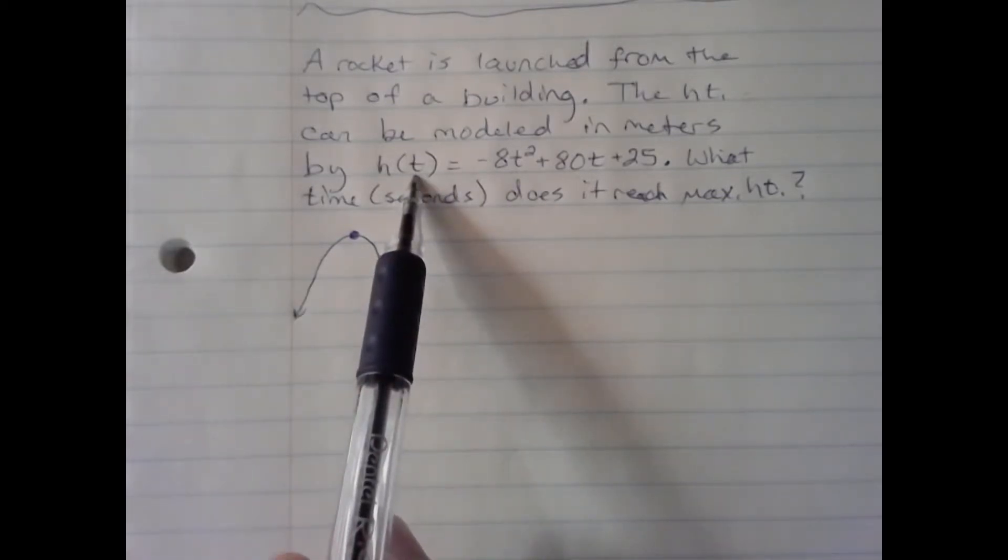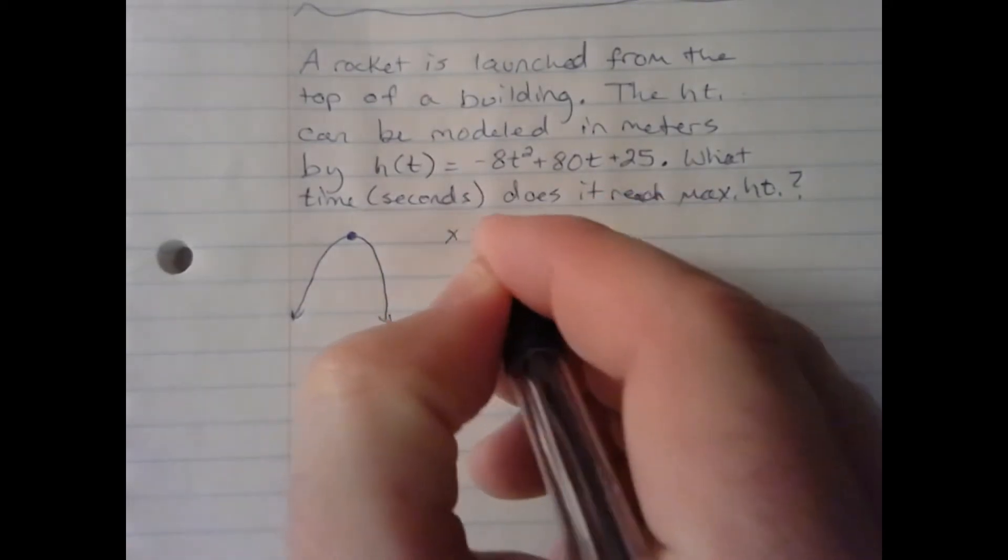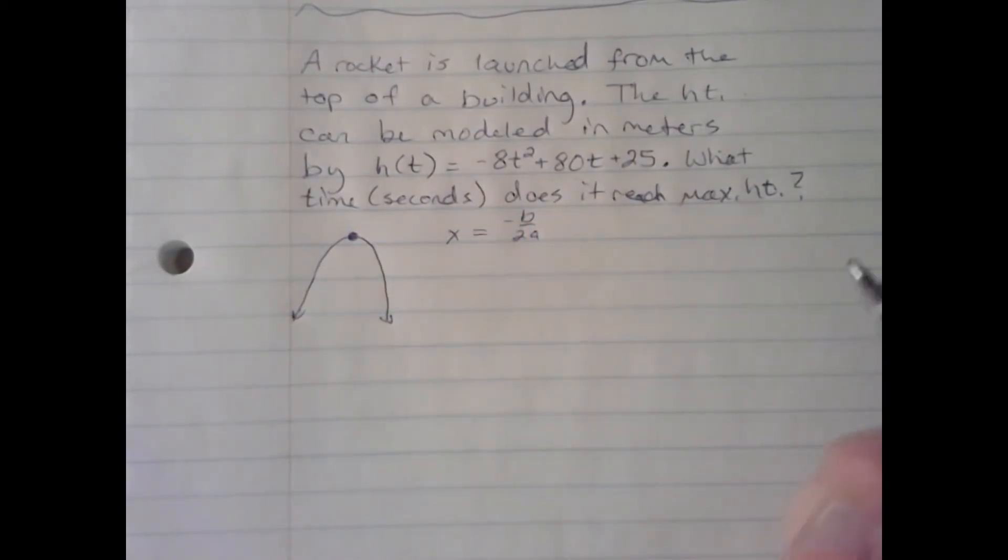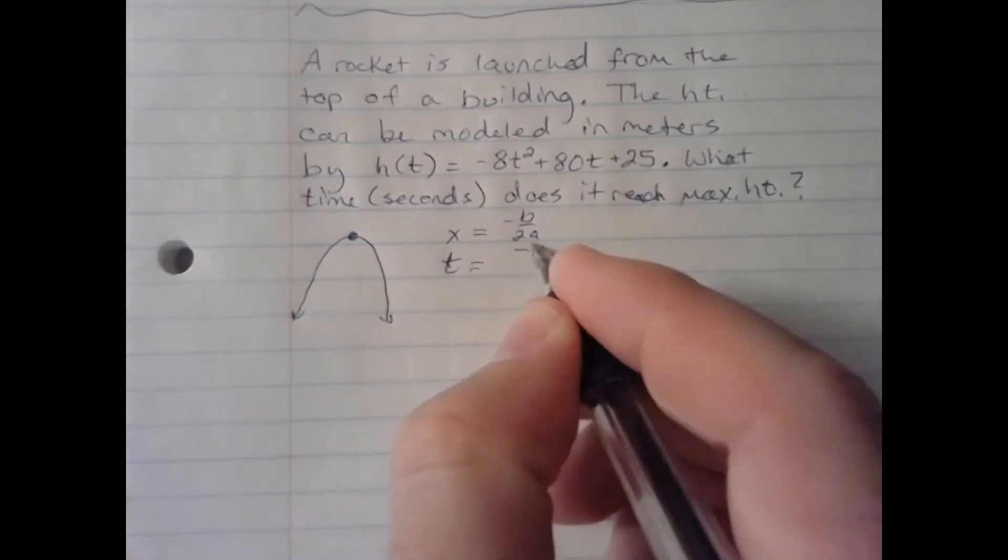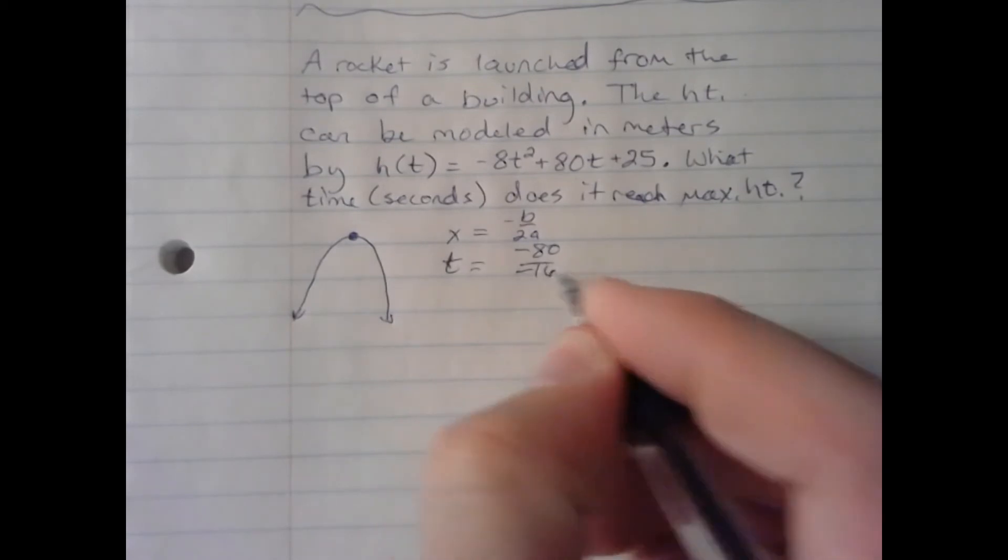If you remember that x = -b/2a is the x-coordinate of the vertex. In this case t, negative b would be -80, and 2 times a would be 2 times -8 for -16. -80 divided by -16 is 5.